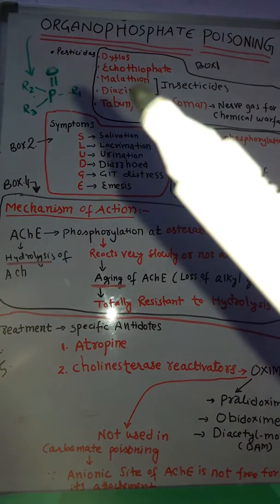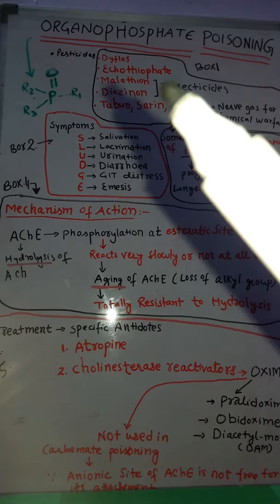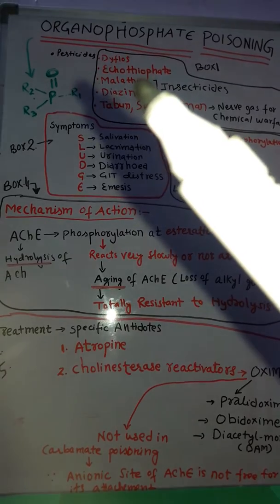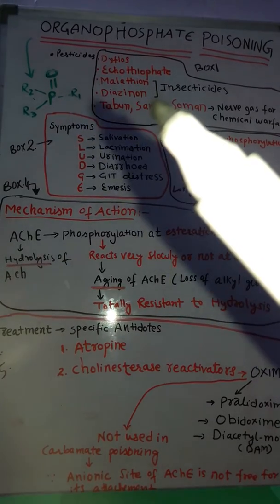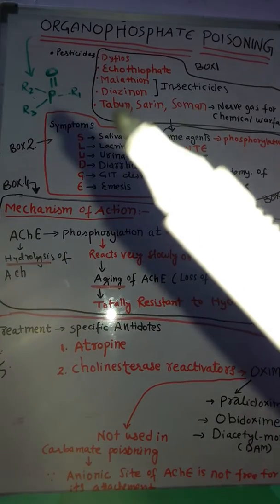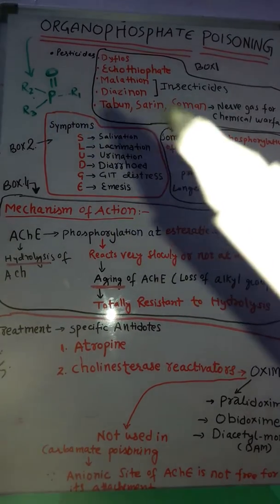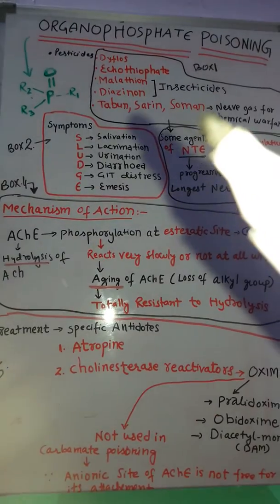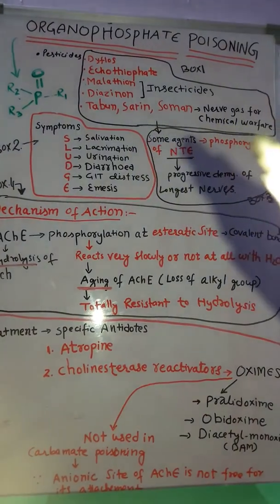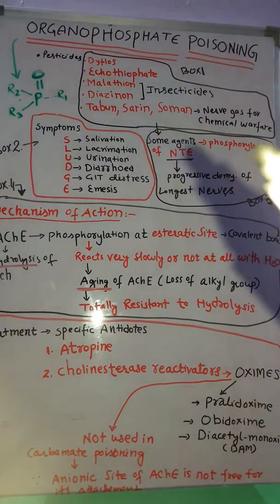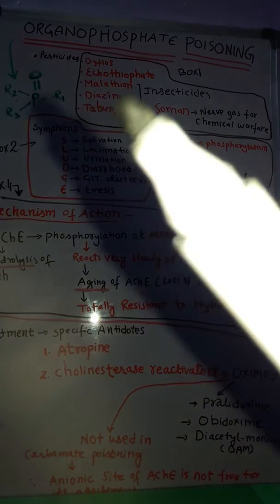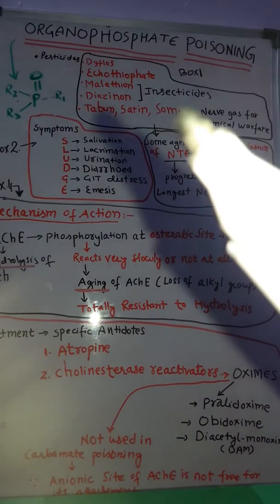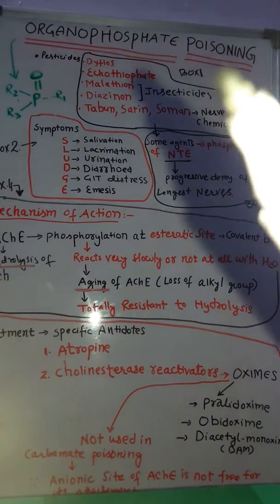Some organophosphates include Difloss, Ecothyophyte, Malathion, Diazinone, Tabun, Sarin, and Soman. These are nerve gases used for chemical warfare. Malathion and Diazinone are used as insecticides.